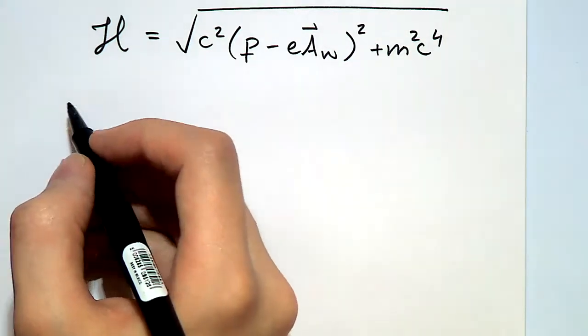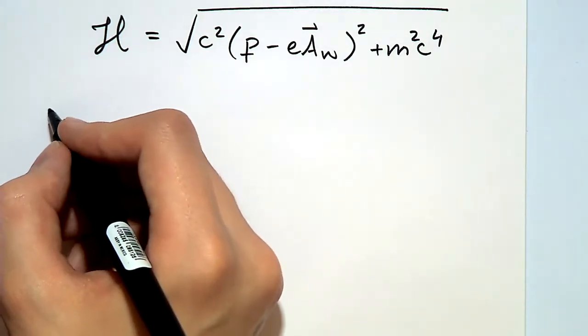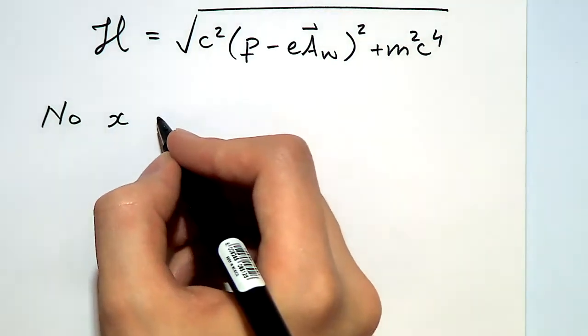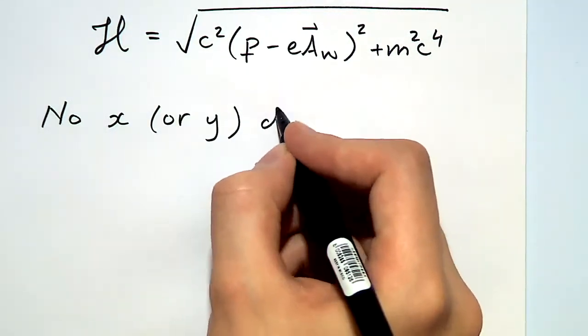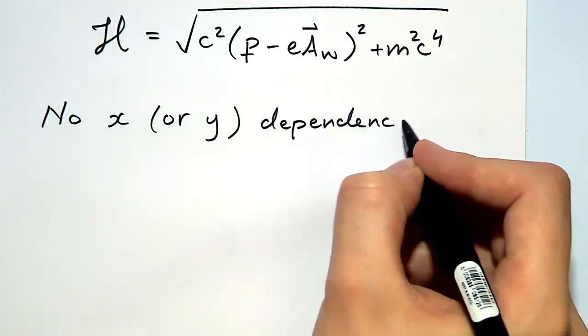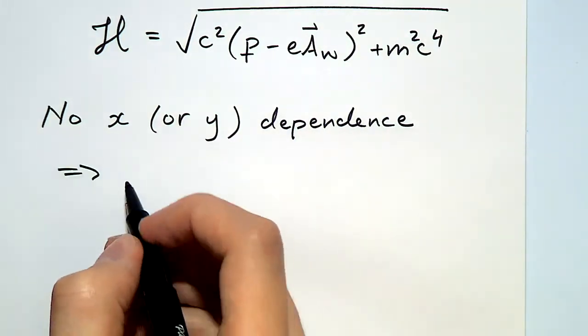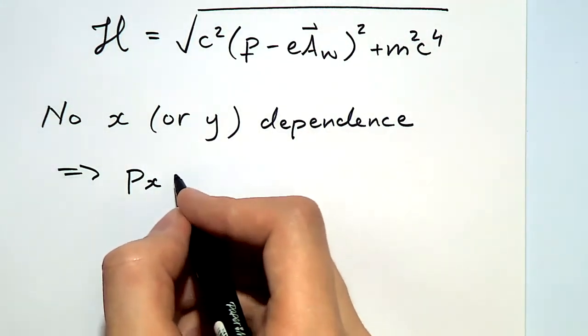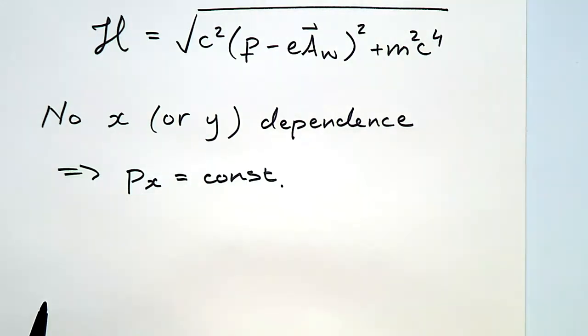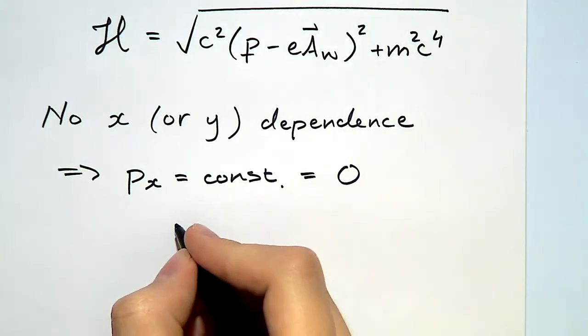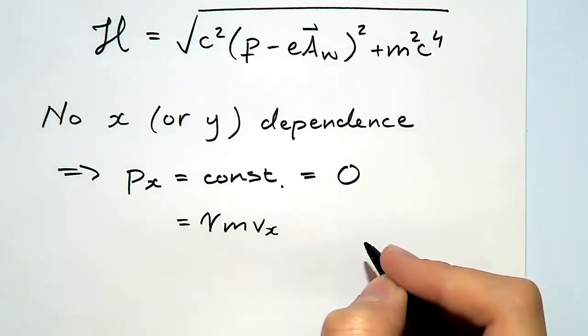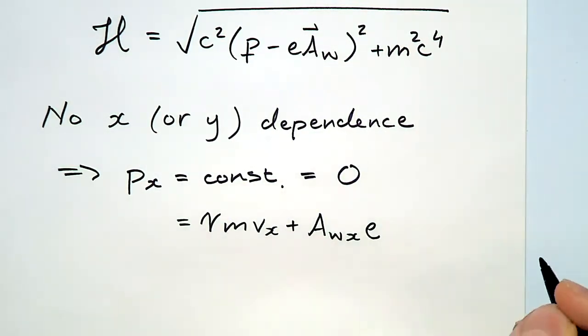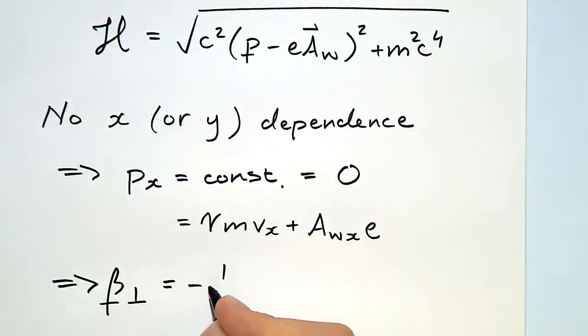With this helical wiggler, the Hamiltonian is independent of x and y, which means that the canonical momenta in both the x and the y direction are conserved. But since before the wiggler, the electrons are just moving along the z-axis, we know that the initial value is zero. This means that we can solve for the kinematic momentum and hence get an expression for the normalized perpendicular velocity vector, which, being proportional to the magnetic vector potential, is again just rotating helically around as we go along the z-axis.